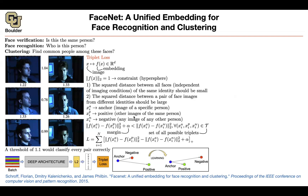Triplet loss has its own problems — nothing is for free. If you keep showing easy examples during training, the model learns slowly and takes a long time to converge. But if you show only hard examples, the model will collapse. You have to balance how you sample these triplets. There is a question in the chat: the anchor is the person you are trying to identify.